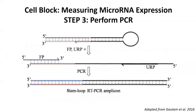Following the cDNA step, we use polymerase chain reaction to amplify and visualize the microRNA products. We design a forward primer specific to our microRNA of interest, and use a universal reverse primer (URP) that binds to the stem loop sequence to create a larger amplicon specific to your microRNA of interest, but large enough to visualize on a gel. This primer design cell block should be used in conjunction with the cDNA and PCR amplification of microRNA cell block.